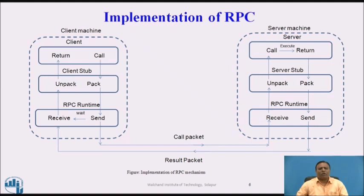Server Stub: The server stub performs two tasks. On receipt of the call request message from the local RPC runtime, it unpacks it and makes a normal call to invoke the appropriate procedure in the server. On receipt of the result of procedure execution from the server, the server stub packs the result into a message and asks the local RPC runtime to send it to the client stub. The server executes the appropriate procedure and returns the result to the server stub.